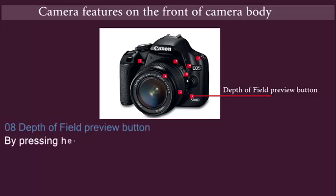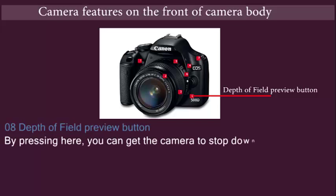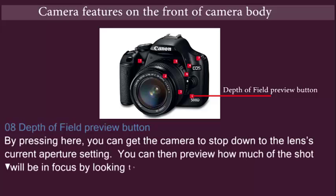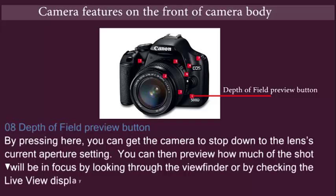Depth of field preview button: By pressing here, you can get the camera to stop down to the lens's current aperture setting. You can then preview how much of the shot will be in focus by looking through the viewfinder or by checking the live view display.